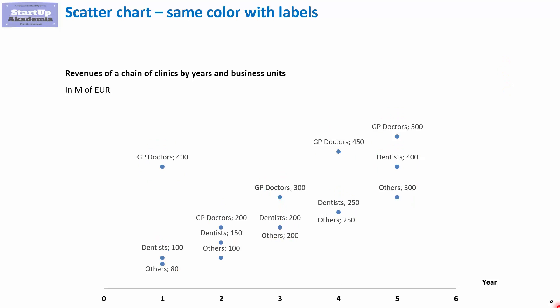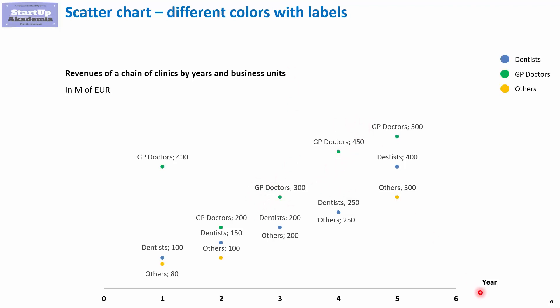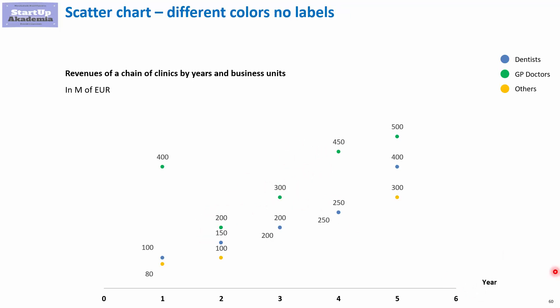A modified version of the bubble chart is the scatter chart, which can be a bit easier to read. In the basic option, we've got the same color for data points with labels. You can also manually change the colors to make them differ, or simply remove the names and just have the values for each point.